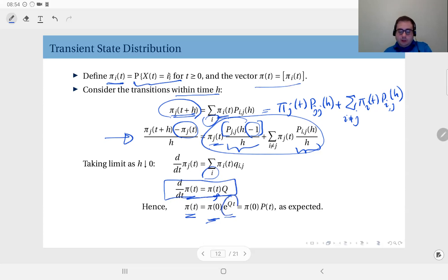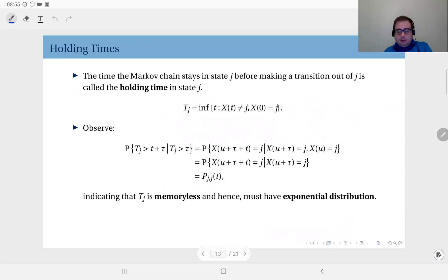And as we have seen earlier, e to the power Qt is P(t), the state transition probability matrix. So that equation can be written as π(t) equals π(0) times P(t), which is quite intuitive. Because this is the distribution at time zero, and this is the state transition probability matrix within time t. So you start in this distribution at time zero and an amount of t time passes, and this is the transition probability matrix. So you multiply them, what you get is the distribution at time t, which makes perfect sense.